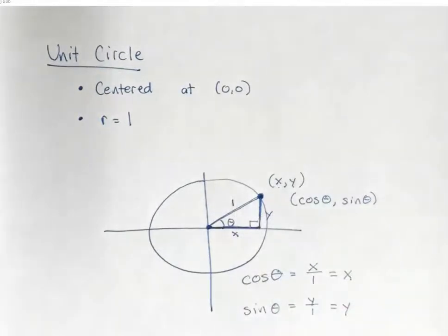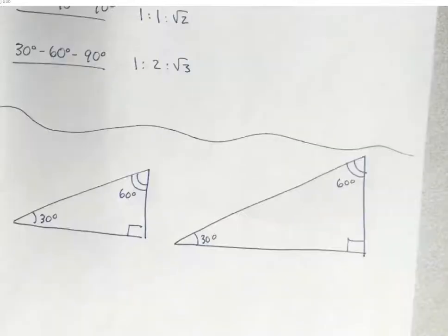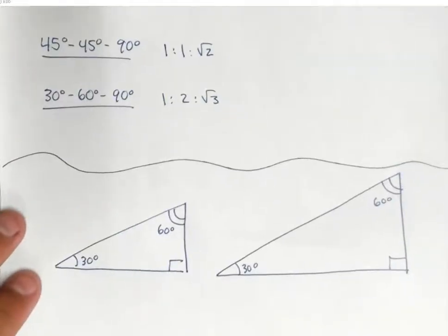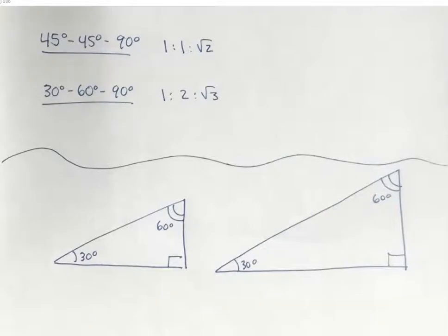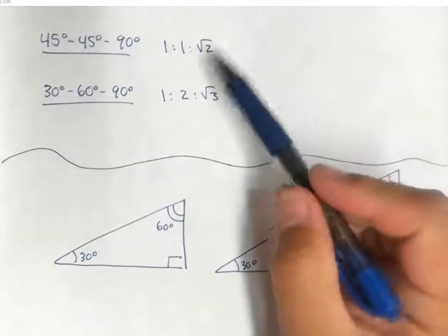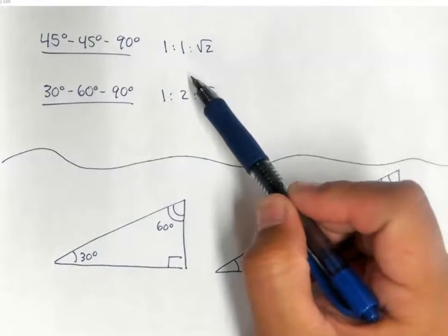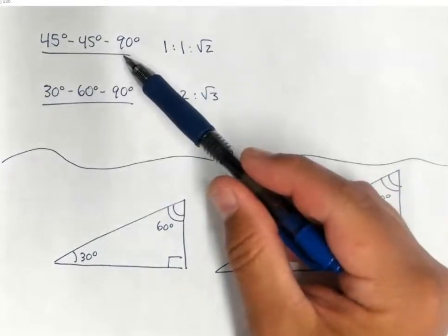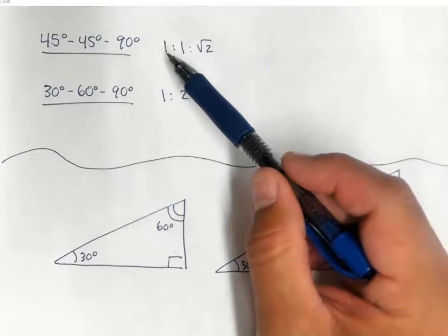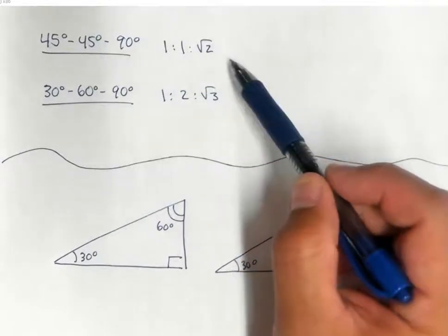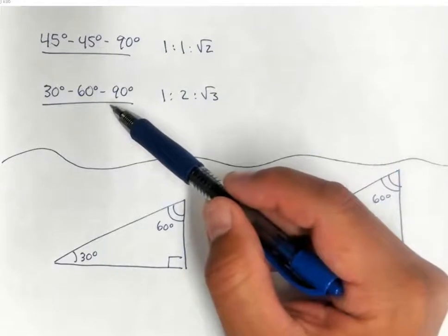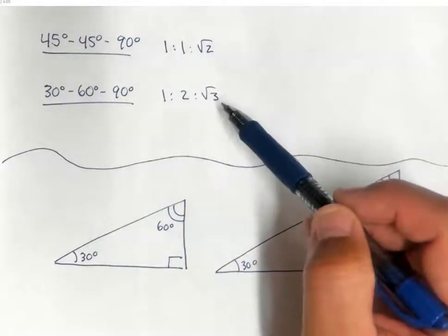Without a calculator, what I require my students to know in calculus is how to handle 45-degree angles (π/4 radian angles) along with their multiples, and 30-degree angles along with their multiples. So I'm going to briefly review the ratios for the sides of any 45-45-90 right triangle — the proportionality goes 1 to 1 to √2 — and for a 30-60-90 right triangle, it goes 1 to 2 to √3.